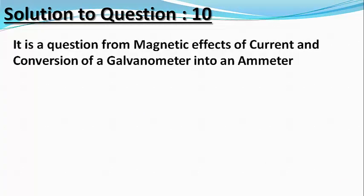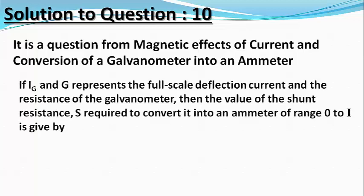Let us now try to solve this question. If IG and G represent respectively the full scale deflection current and the resistance of the galvanometer, then the value of the shunt resistance S required to convert this galvanometer into an ammeter of range 0 to I amperes is given by: S = (IG × G) / (I − IG). — Equation 1.